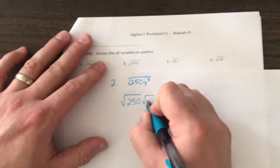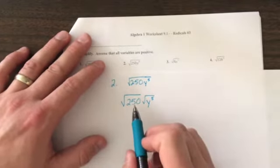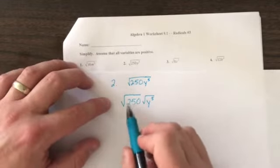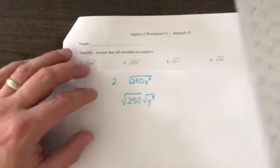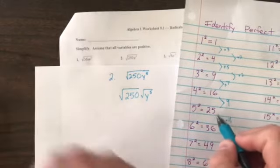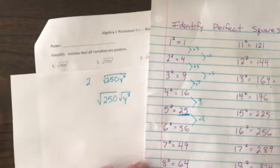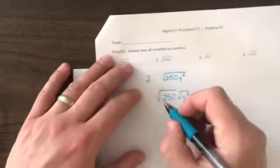Now I'm looking for a perfect square factor of 250. So I'm thinking about my list of perfect squares. One that comes to mind is 25. 250 is not on the list here as a perfect square, so we'll start with just 25.